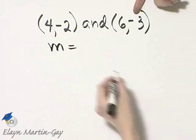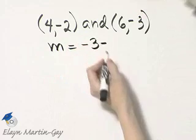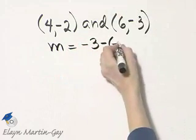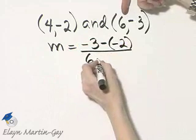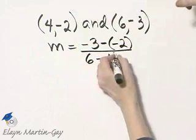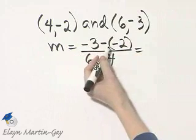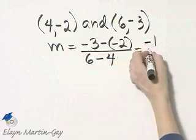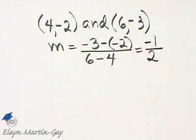So remember it's y, negative 3, minus this y, be very careful, negative 2, over x, which is 6, minus x of 4. What do we have in the numerator? That's negative 3 plus 2. That would be negative 1. And in the denominator, 6 minus 4 is 2. So our slope is negative one-half.